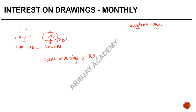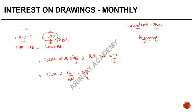Since L withdraws a constant amount at the beginning of each month throughout the year, we can apply the formula: Total Drawings × Rate of Interest × 6.5/12. So that is ₹12,000 × 12/100 × 6.5/12. The 12 in the rate cancels with the 12 in the denominator, leaving 6.5 × 120, which gives ₹780. So the amount to be charged as interest on drawings from L is ₹780. This formula works because it was a constant amount withdrawn at the beginning of each month.